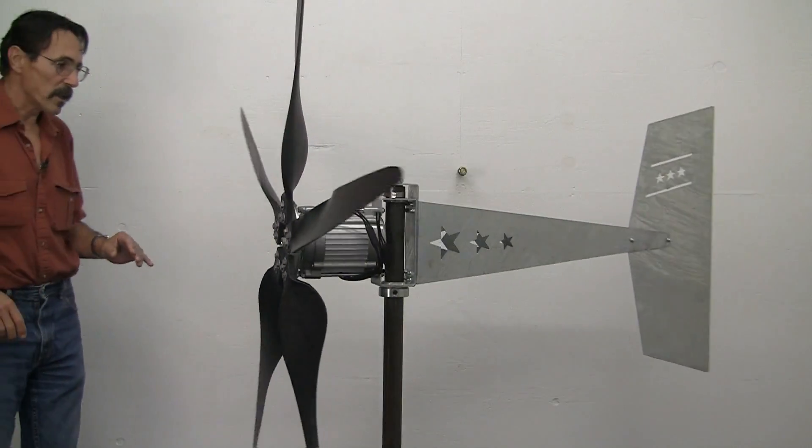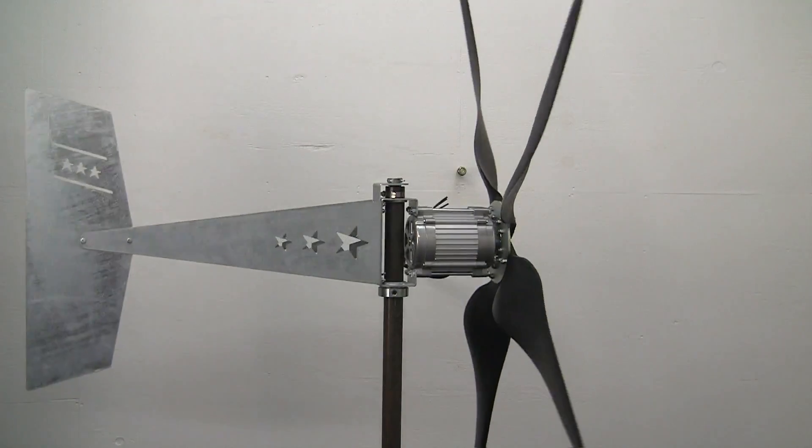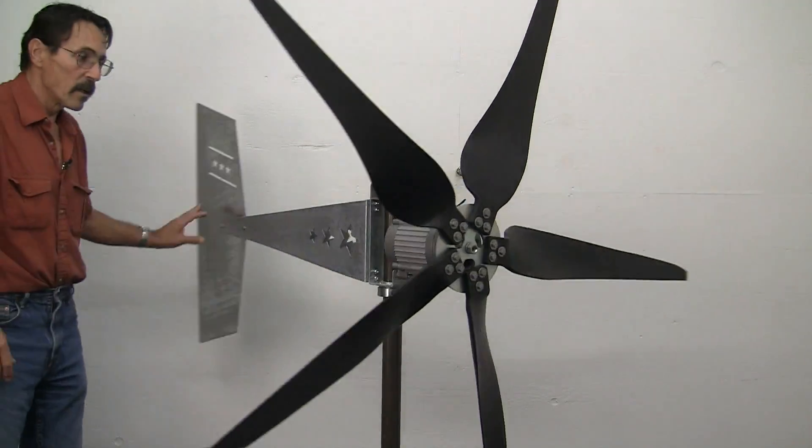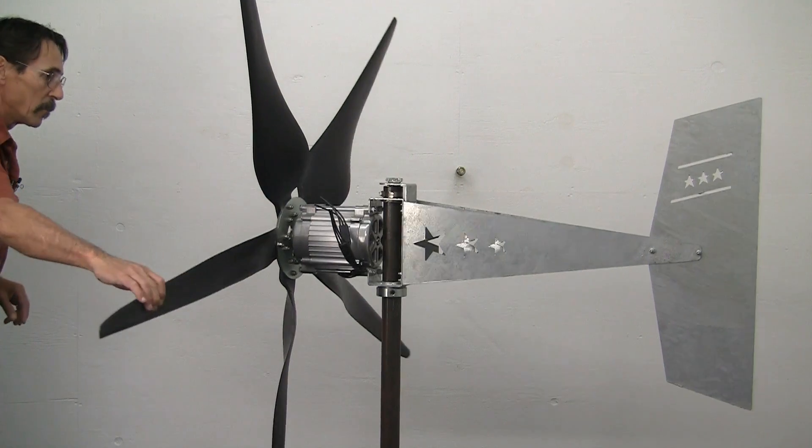Now the guys that have already got this bearing, they've stuck it on their wind turbine, and for as little as one mile per hour wind, we'll get this wind turbine to track into the wind. That's what guys have told me - one mile per hour and it is tracking in the wind.